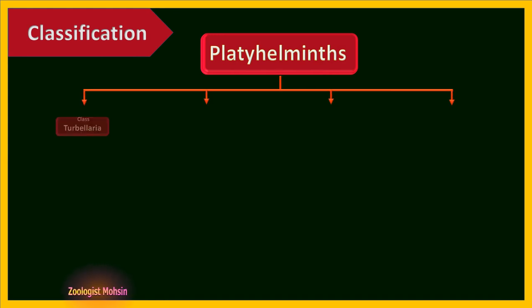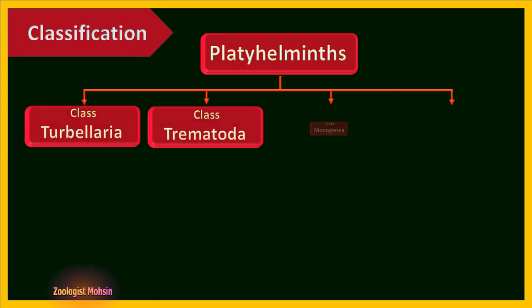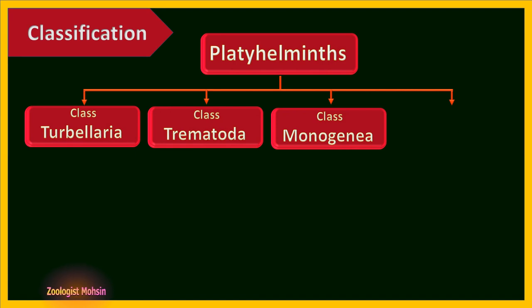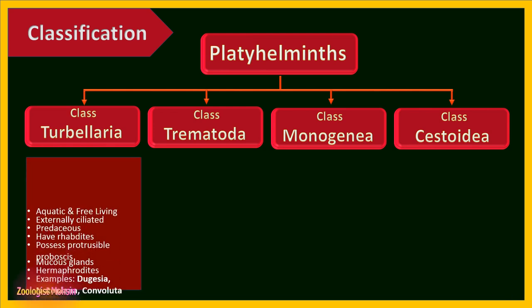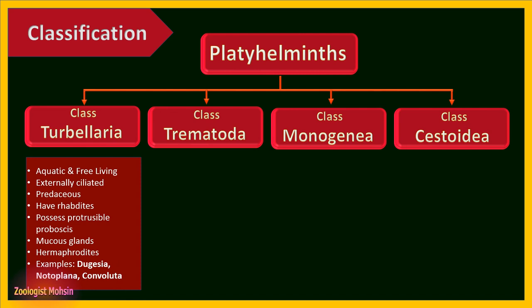Classification of Platyhelminthes: they are divided into four classes — Turbellaria, Trematoda, Monogenea, and Cestoidea. Let's compare the basic features. Turbellarians are aquatic and free-living; they have external cilia on the body and are predacious, meaning they are predators. They have rhabdites, special cells in the epidermis.